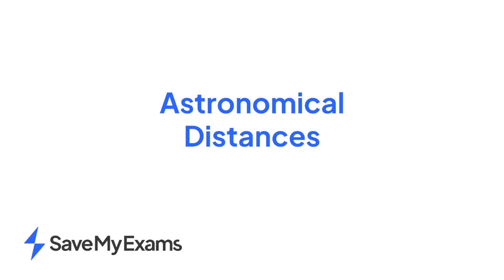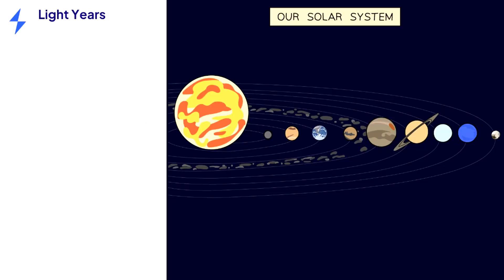In this video we'll look at distances on an astronomical scale within the solar system and beyond. Astronomical distances tend to get very big very fast. For this reason, astronomers will usually quote distances in light years. One light year is defined as the distance travelled by light in one year.